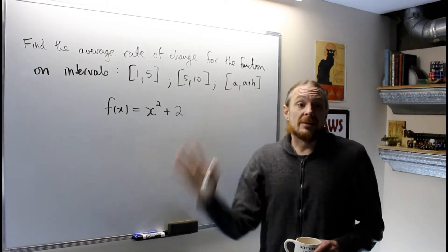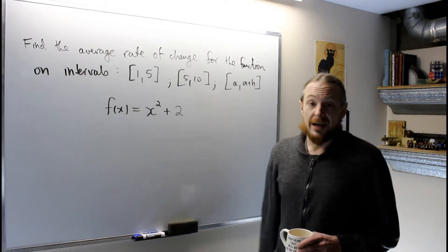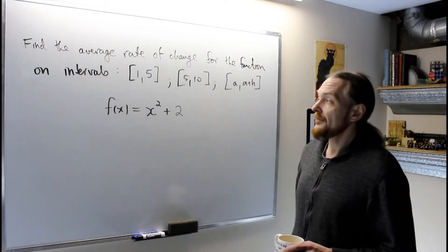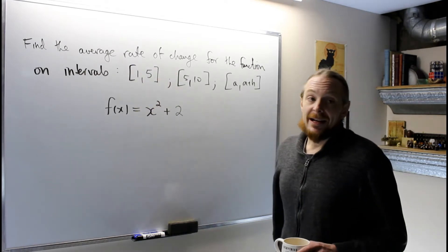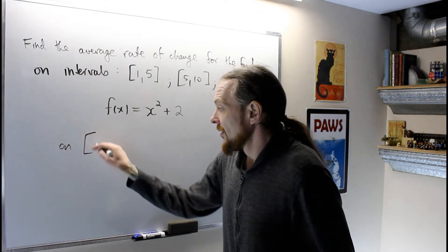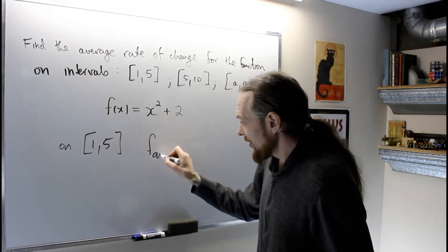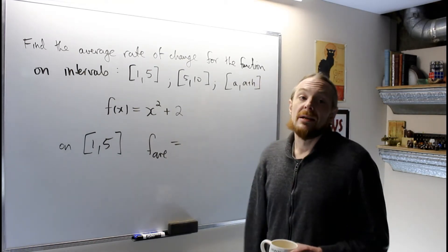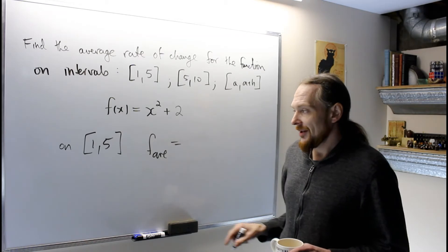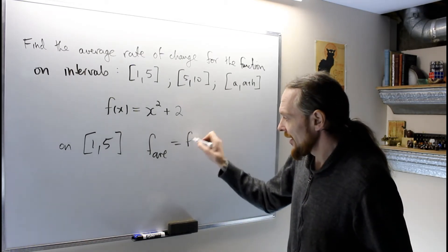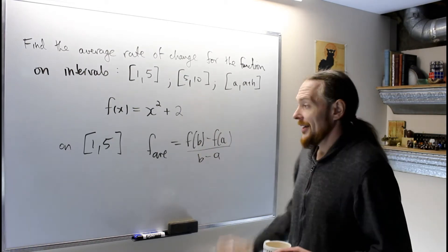We're doing wax on, wax off, Mr. Miyagi—doing karate before we show you what we're actually doing. For the first interval, I have a is 1 and b is 5. On the interval [1, 5], the f average is the way I denote it. Most books call it something else, but I'm going to call it f average. This is going to be f(b) minus f(a) over b minus a every time.